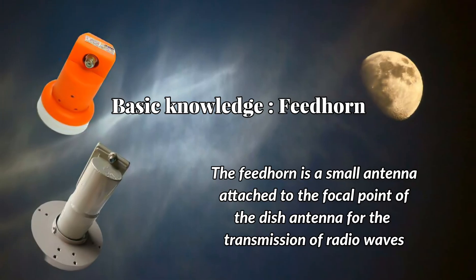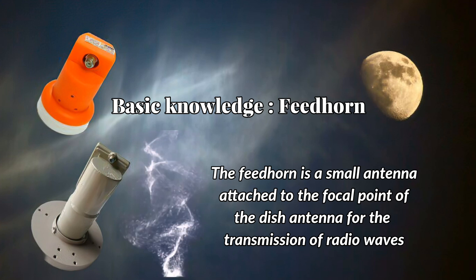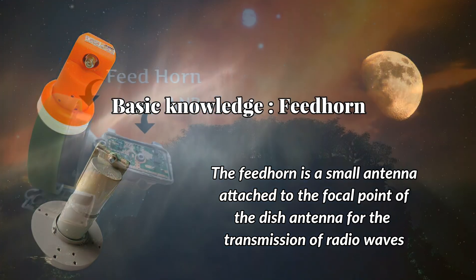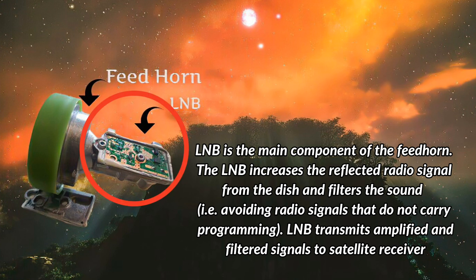Basic knowledge — Feed Horn: The feed horn is a small antenna attached to the focal point of the dish antenna for the transmission of radio waves. The LNB is the main component of the feed horn. The LNB increases the reflected radio signal from the dish and filters out radio signals that do not carry programming. The LNB then transmits the amplified and filtered signals to the satellite receiver.